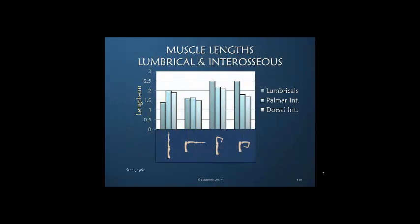Here we're looking at the lumbricals shown in darker shading versus the palmar and dorsal interosseous muscles. In these two active positions, the lumbrical is much longer than the dorsal or volar interosseous.